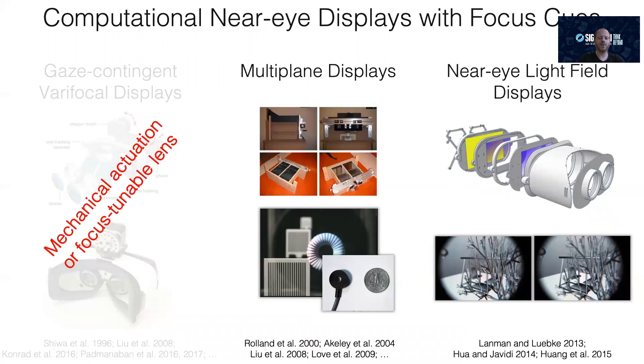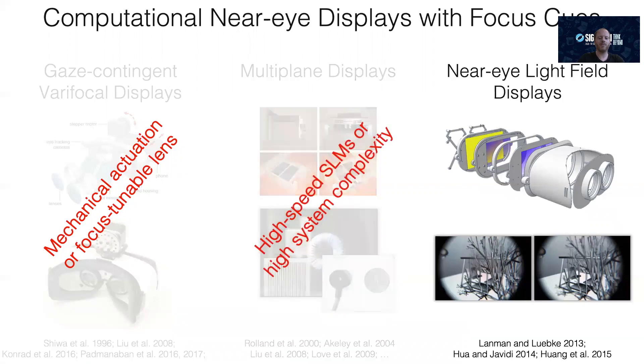Multi-plane displays are a great idea, but they either require extremely high-speed spatial light modulators and focus-tunable lenses, or multiple display planes. Both of these options significantly increase the system complexity. Light-field displays are also a really great idea, but their spatial angular resolution is fundamentally limited by diffraction.